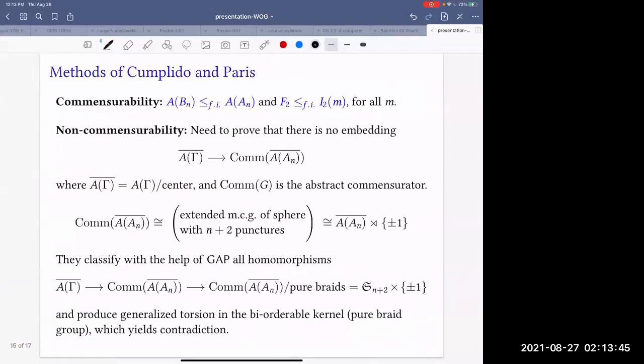Methods with which they did that: In positive direction it's very easy because it turns out that Artin group of type B_n sits as a subgroup of finite index in the Artin group of type A_n. So they are commensurable for very easy reason. And similarly in I_2, there is free group of rank two as a subgroup of finite index, no matter what m is, therefore they all commensurable with F_2. The difficult part is to prove non-commensurability.